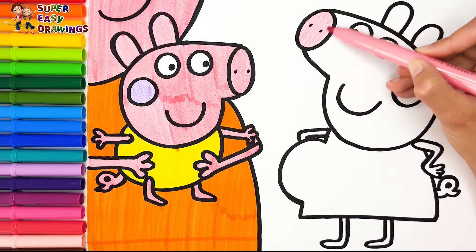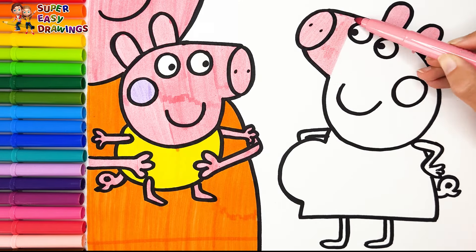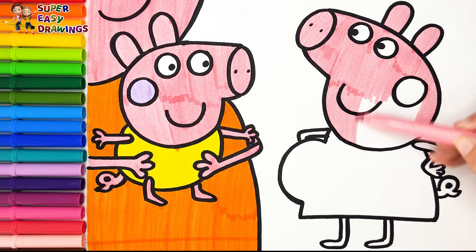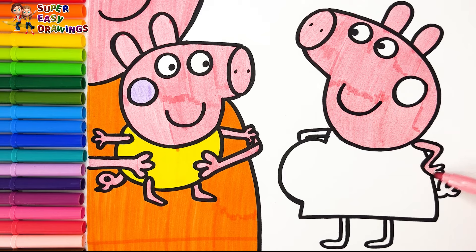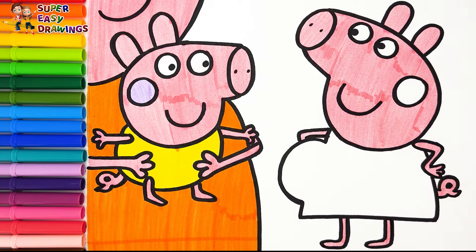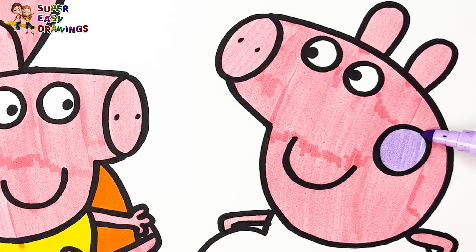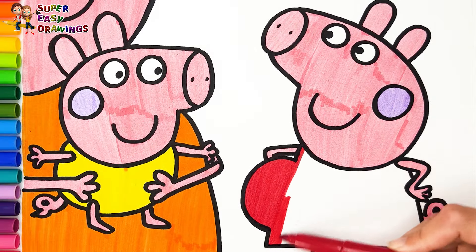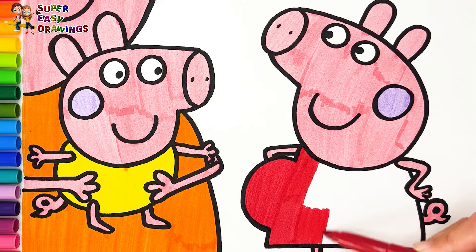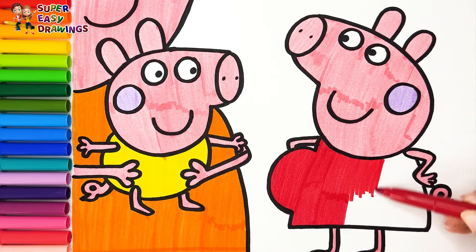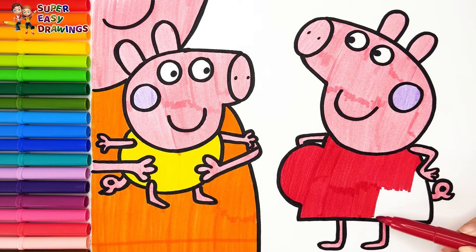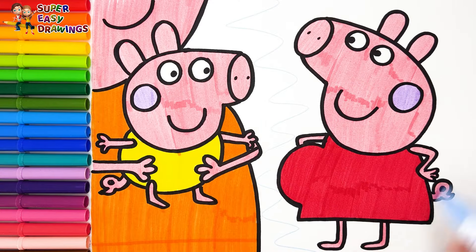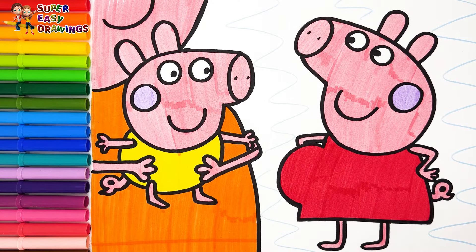Finally I color Peppa. I use this pink marker for her skin. Then I use light purple for her cheek. I color her dress with this red marker. And I add a little blue in the background. Excellent!